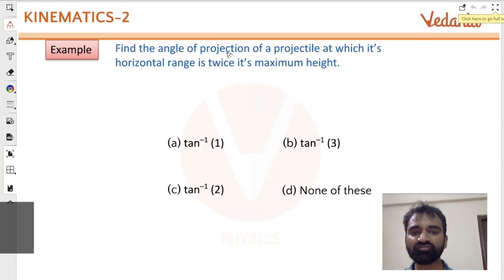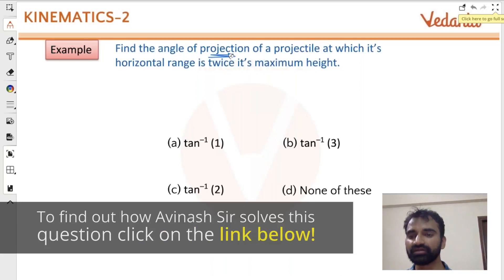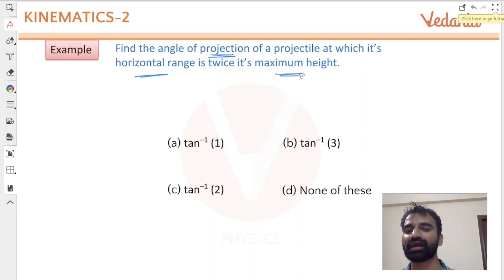At what angle of projection of a projectile will the maximum range be twice the maximum height?